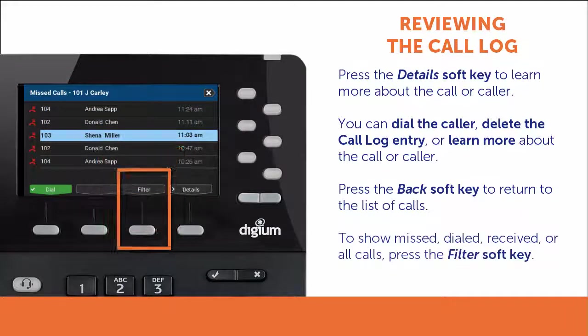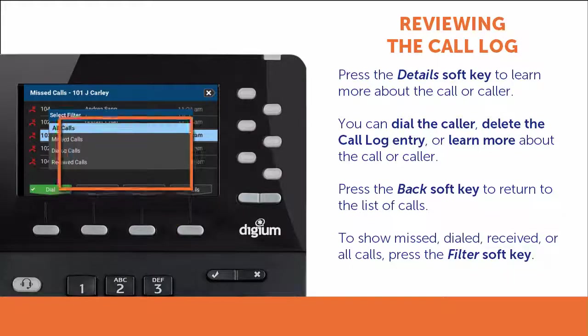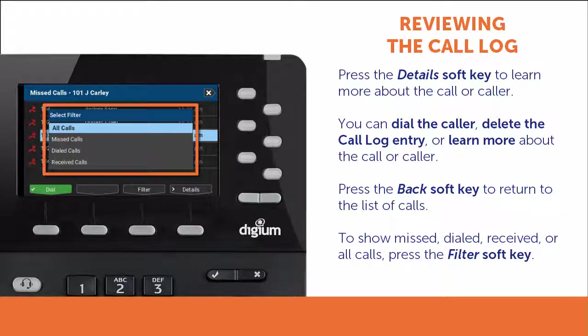Press the Filter soft key to show only missed, dialed, received, or all of your calls.